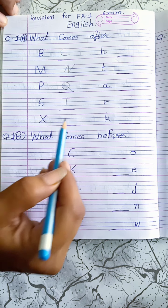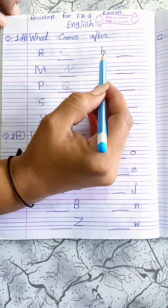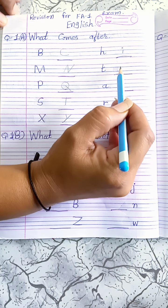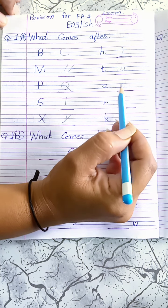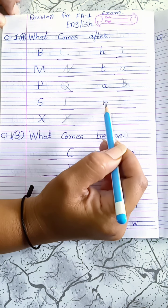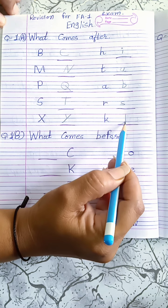What comes after X? Y. What comes after H? I. What comes after T? U. What comes after A? B. What comes after R? S. What comes after K? L.